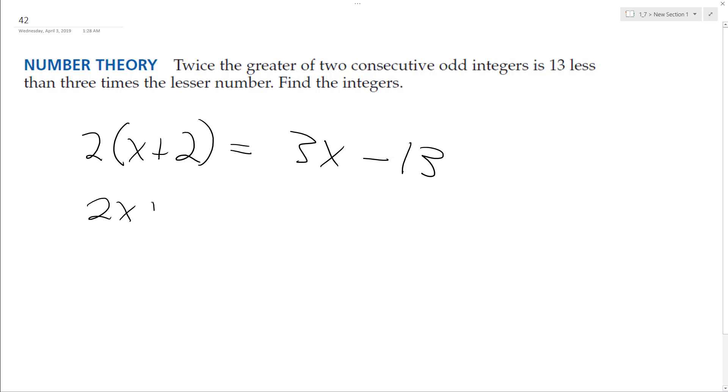So 2x plus 4 equals 3x minus 13. Subtract 2x from both sides, add 13 to both sides, and we get x is equal to 17.